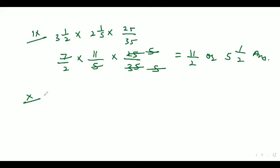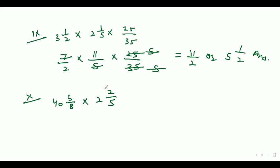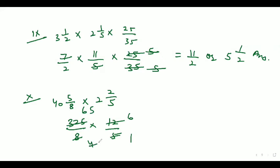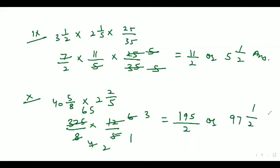Now let's move to the tenth part. The tenth part is 40 whole 5/8 into 2 whole 2/5. So 40 whole 5/8 can be written as 325/8 and 2 whole 2/5 can be written as 12/5. After cancellation, our answer comes out as 195/2 or 97 whole number 1/2. This is our answer.